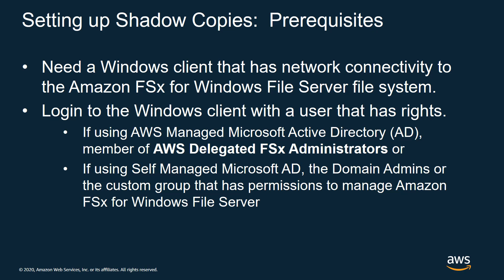Next, you need to log into the Windows client with a user that has rights. If you're using AWS Managed Microsoft Active Directory, you need to be a member of the AWS Delegated FSx Administrators group. If you're using a self-managed Microsoft Active Directory — for example, your on-premises Active Directory or an Active Directory running on EC2 — you need to be a member of the domain admins group, or the custom group that has permissions to manage Amazon FSx for Windows File Server. When you specify a self-managed AD connection, you specify a service account and a group that Amazon FSx will delegate rights to for managing the file server. You need to be a member of that group.